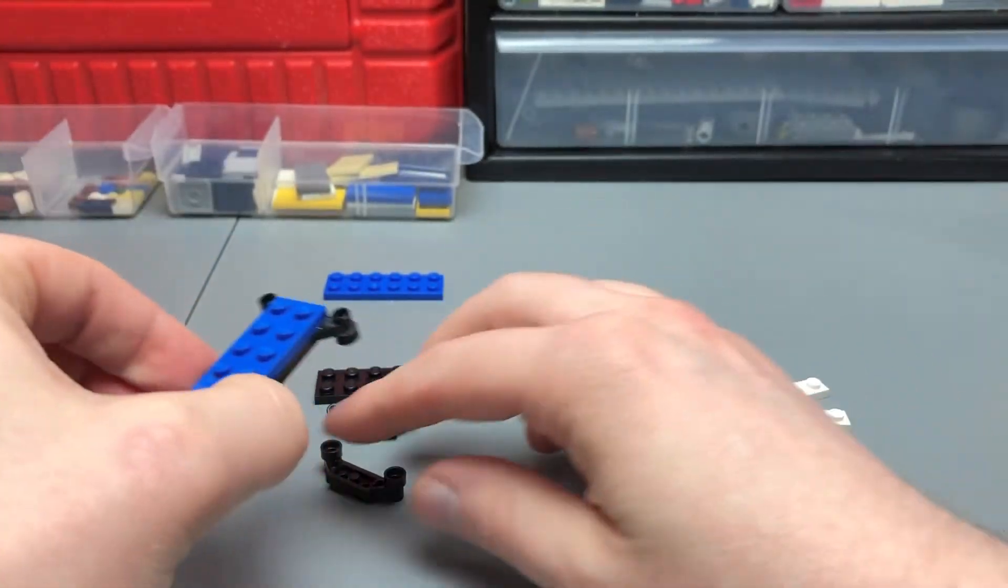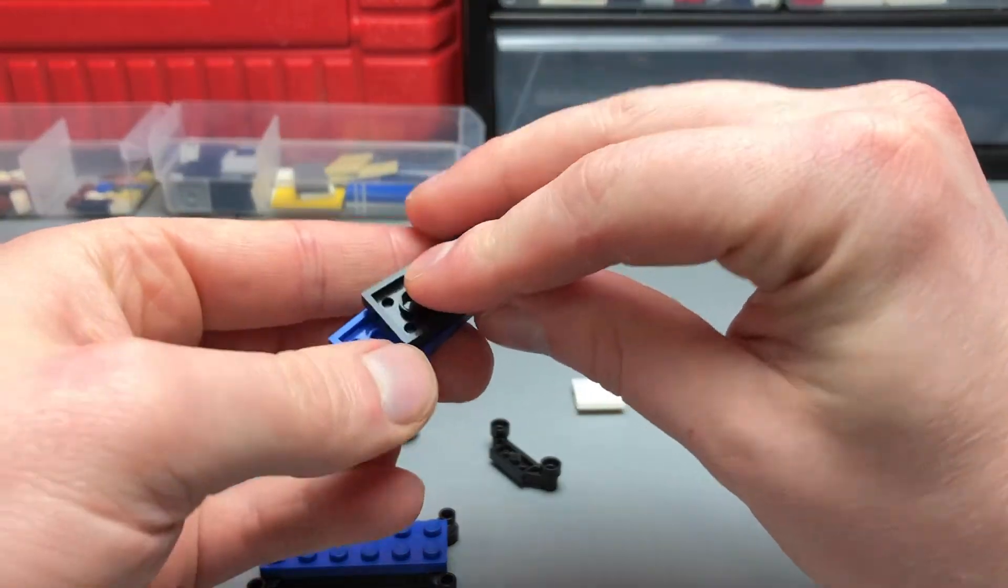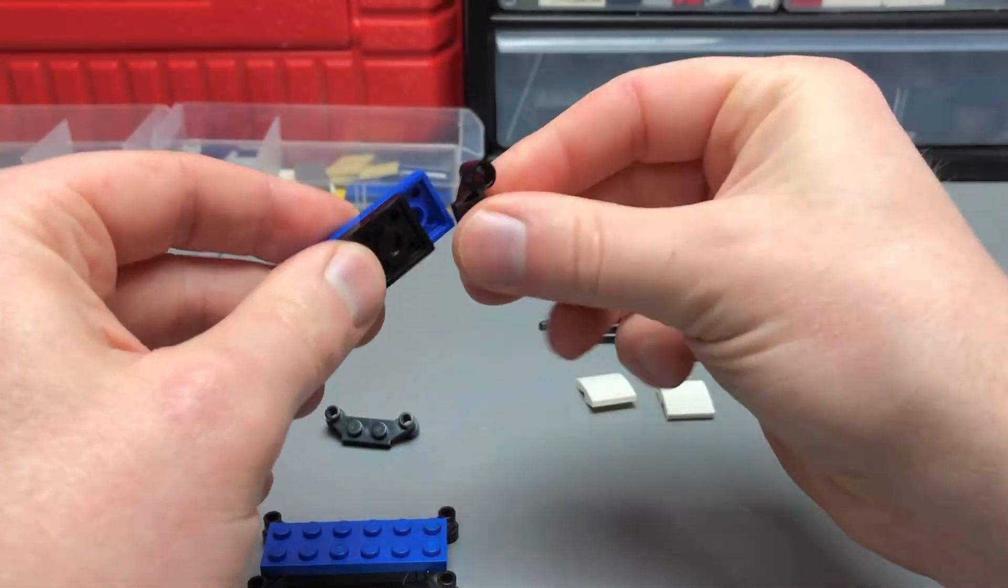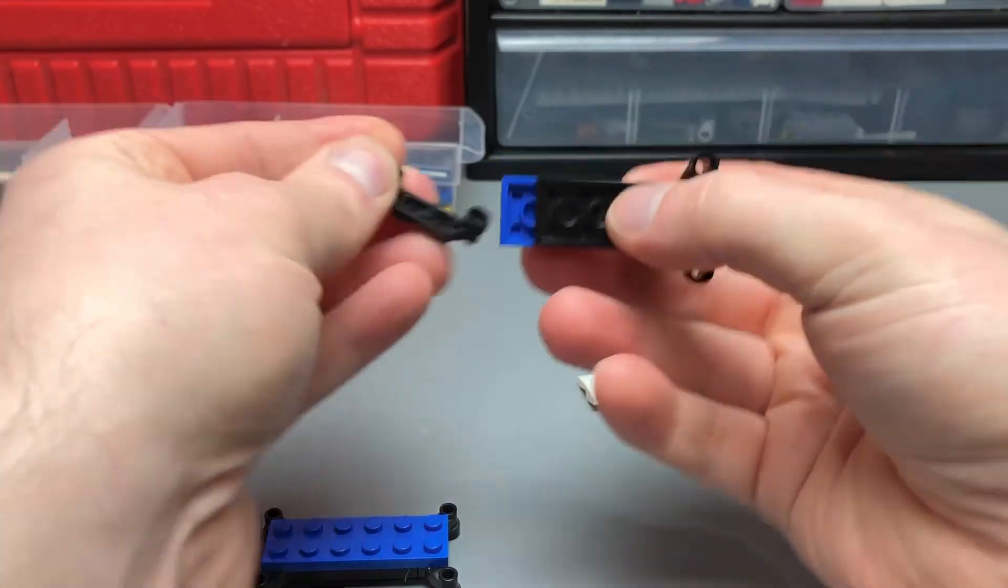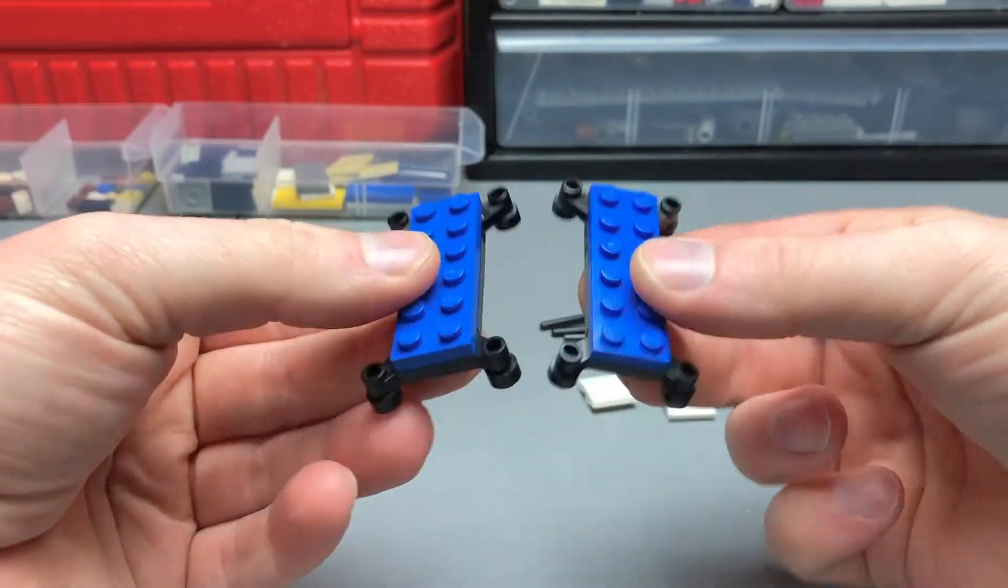Okay, and then we're going to go ahead and repeat the process again. So, 2x6 plate, 2x4, offset extension pieces. There we go. So, that's what we have so far.